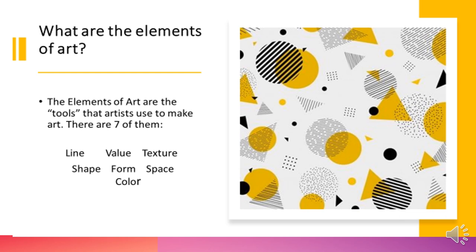We will talk now about elements of art. What are the elements of art? The elements of art are the tools that artists use to make art. There are seven of them: line, value, texture, shape, form, space, and color.